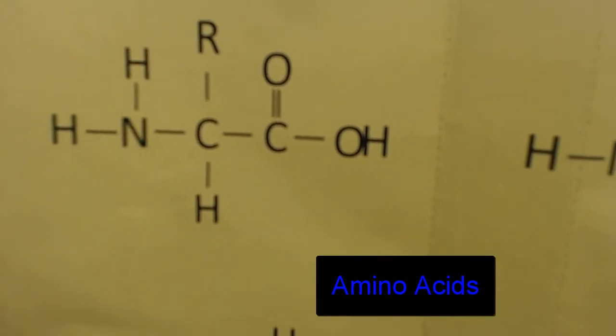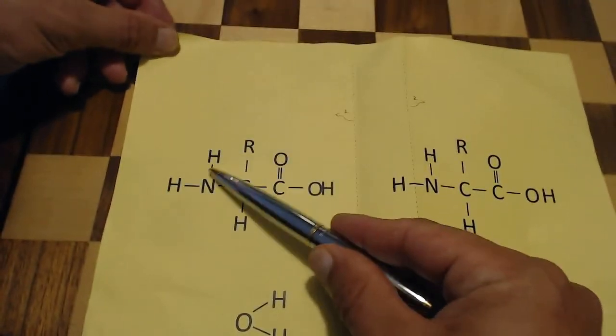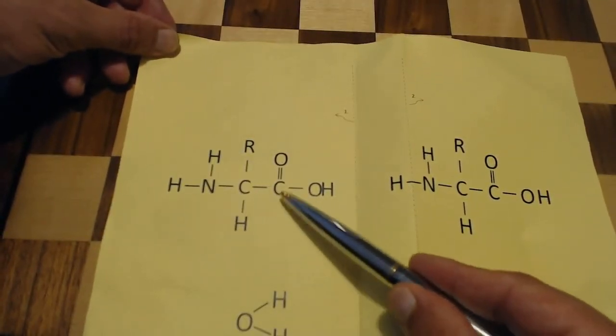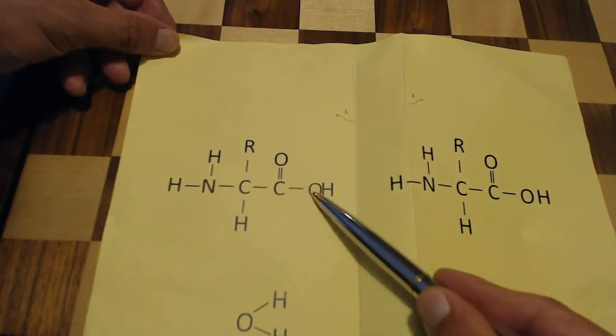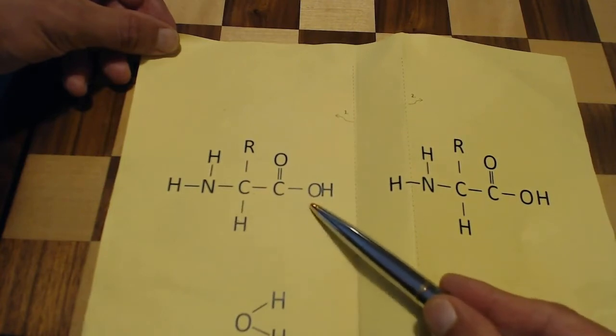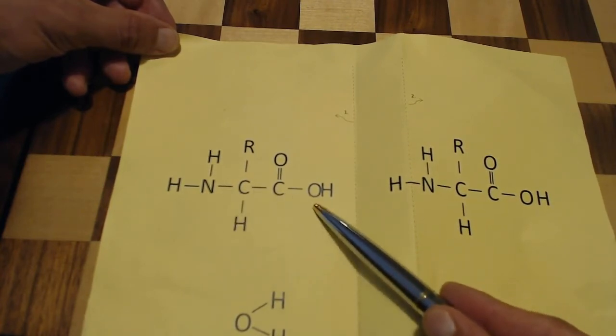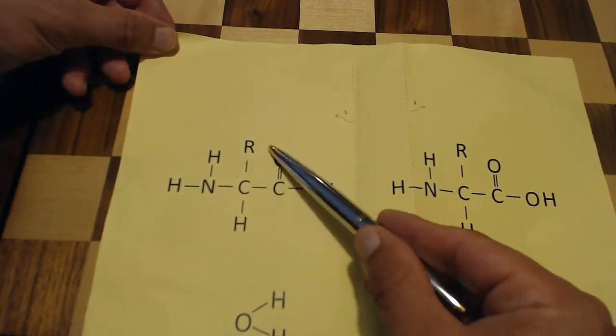So here is an amino acid. One clue is the amino group which is the NH2. The other one is the carboxylic acid group which is the C double bonded to the O and the OH, which gives it the name amino acid. The amino acid is a building block of a protein. There's 20 different types of naturally occurring amino acids and they differ in this R group right here.